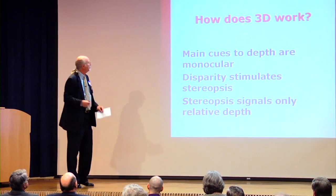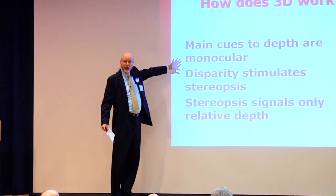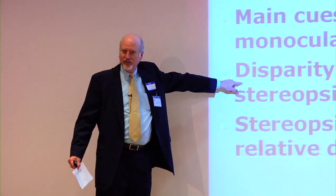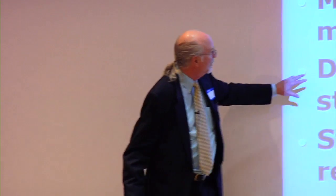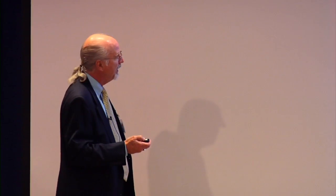So how does the current virtual 3D work? The main cues to depth are still monocular — those cues are still there as they always have been. Disparity stimulates stereopsis. Disparity stimulates stereopsis, and stereopsis signals only relative depth. What we're getting from 3D displays is a sense from the eyes, resulting from disparity — the fact that the two images are not exactly the same. Our brain has an amazing ability to put together the disparities in the signal and give us a sensation of depth.